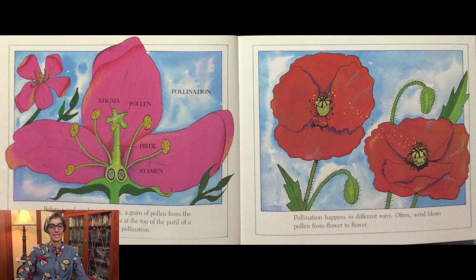Before a seed can begin to grow, a grain of pollen from the stamen must land on the stigma at the top of the pistil of a flower like itself. This is called pollination.